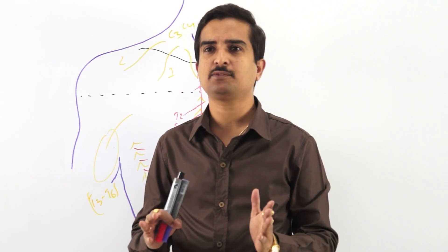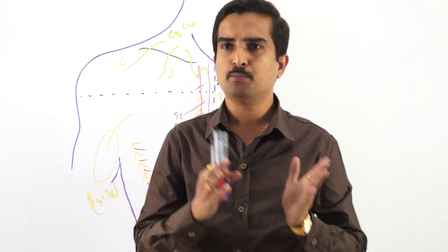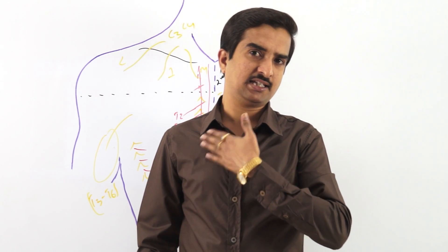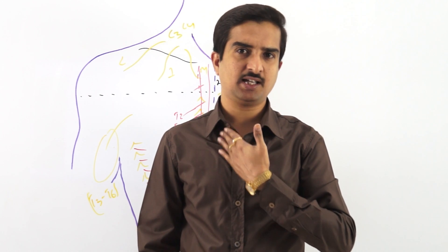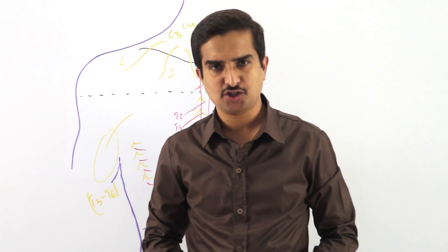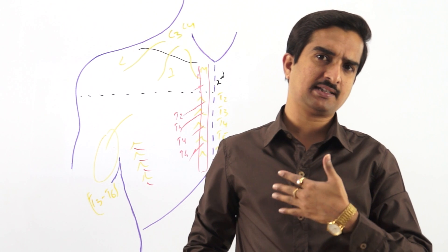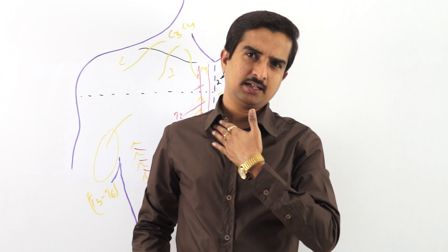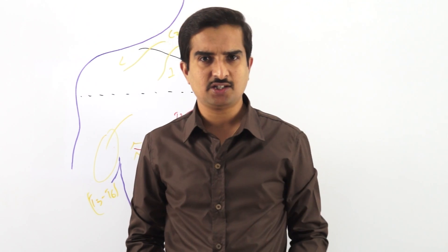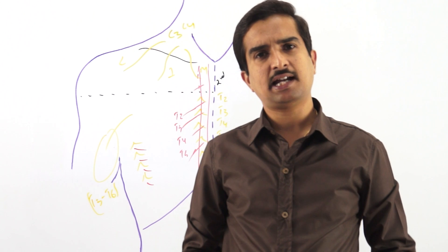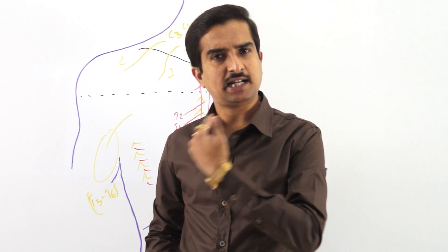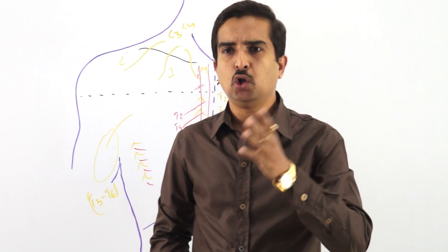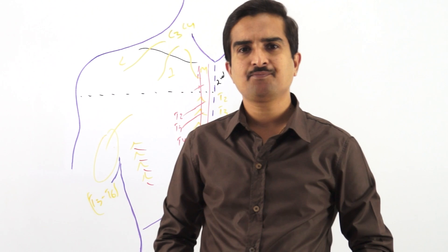To summarize: the platysma is a thin, broad sheet of subcutaneous muscle. Its fibers arise from the deep fascia of the pectoral region (pectoral fascia), run upwards and medially, cross the clavicle, reach the neck region, and finally give attachment to the base of the mandible and the skin over the lower and posterior part of the face.